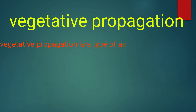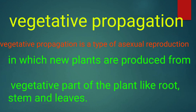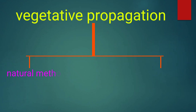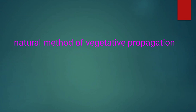Vegetative propagation is a type of asexual reproduction in which new plants are produced from vegetative parts of plants, like roots, stem, and leaves. Vegetative propagation is of two types: natural methods of vegetative propagation and artificial methods of vegetative propagation. In this video we will discuss natural methods of vegetative propagation.